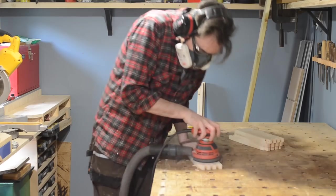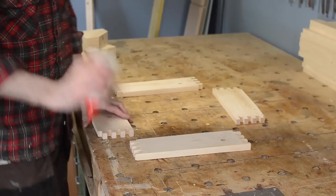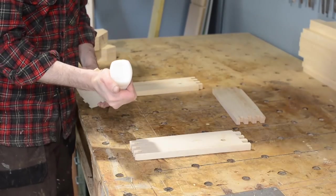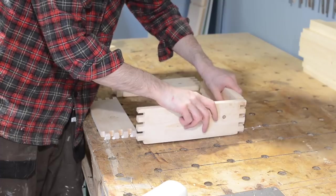With all the joints cut I can give all the pieces a quick sand down before I can get them put together. Before assembly I always have a dry fit and then I lay out all the pieces in the correct position so then I can get glue in and get them all slotted together.